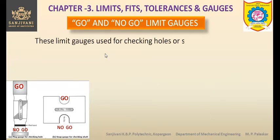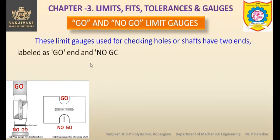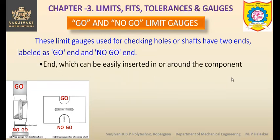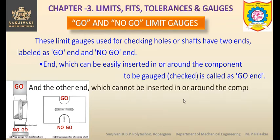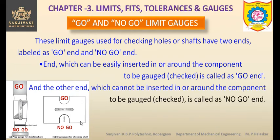These limit gauges, used for checking holes or shafts, have two ends labeled as go end and no-go end. The end which can be easily inserted in or around the component to be gauged or checked is called the go end. For the snap gauge for checking shafts, this is the go end and this is the no-go end. For the plug gauge for checking holes, this is the go end.